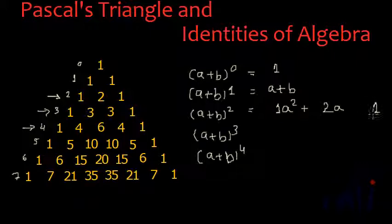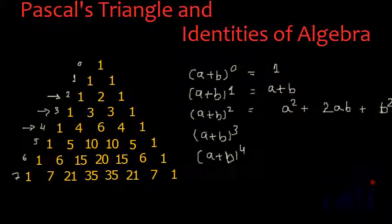Then we write the powers of B. The maximum power of B will be on the right-hand side, so B² goes there, and then we reduce the power of B by 1 to get just B in the middle term. The 1 coefficients can be removed since anything multiplied by 1 is itself. And now we get the formula: (A+B)² = A² + 2AB + B².